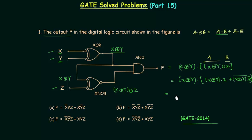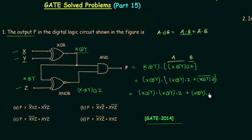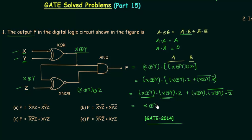Applying the distributive law, we get: (x XOR y) AND (x XOR y) AND z, OR (x XOR y) AND (x XOR y)' AND z'. Using the identities A AND A = A and A AND A' = 0, the first term simplifies to (x XOR y) AND z, and the second term becomes 0 AND z' = 0.